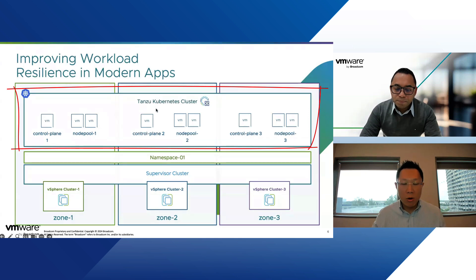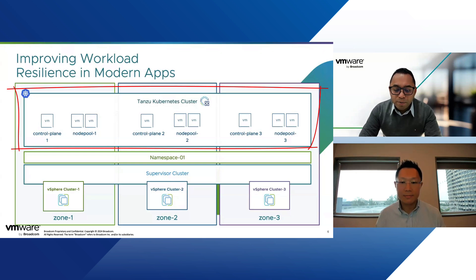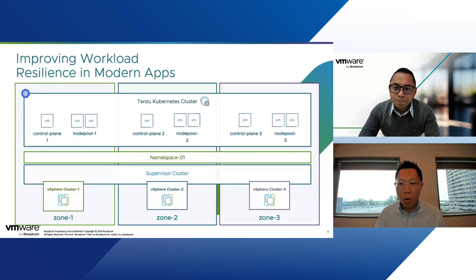When you deploy your apps onto these clusters, the apps will also be distributed across multiple different worker nodes, giving more resiliency for your application if you design your infrastructure this way. It's mainly for higher availability and resiliency. On the performance side, more clusters and more hosts definitely means more resources available for your supervisor cluster as well as your TKC Kubernetes clusters.